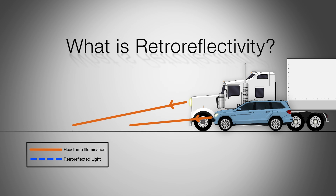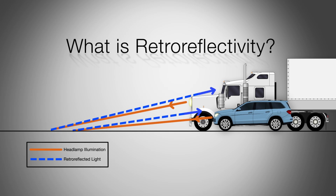Retroreflectivity is what makes traffic control devices, such as pavement markings, direct light from headlamps back towards the vehicle, allowing drivers to see further down the road at night.